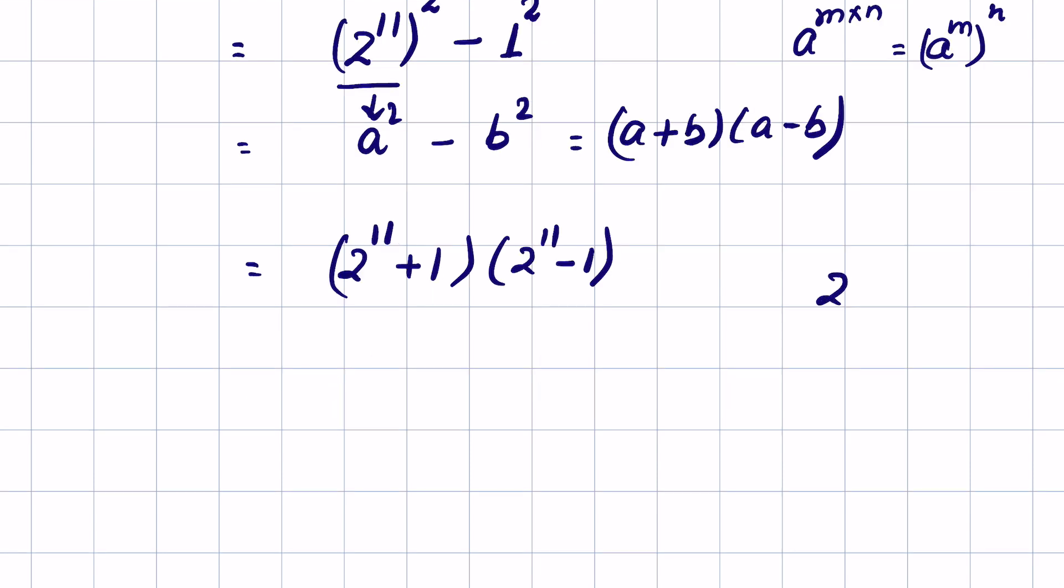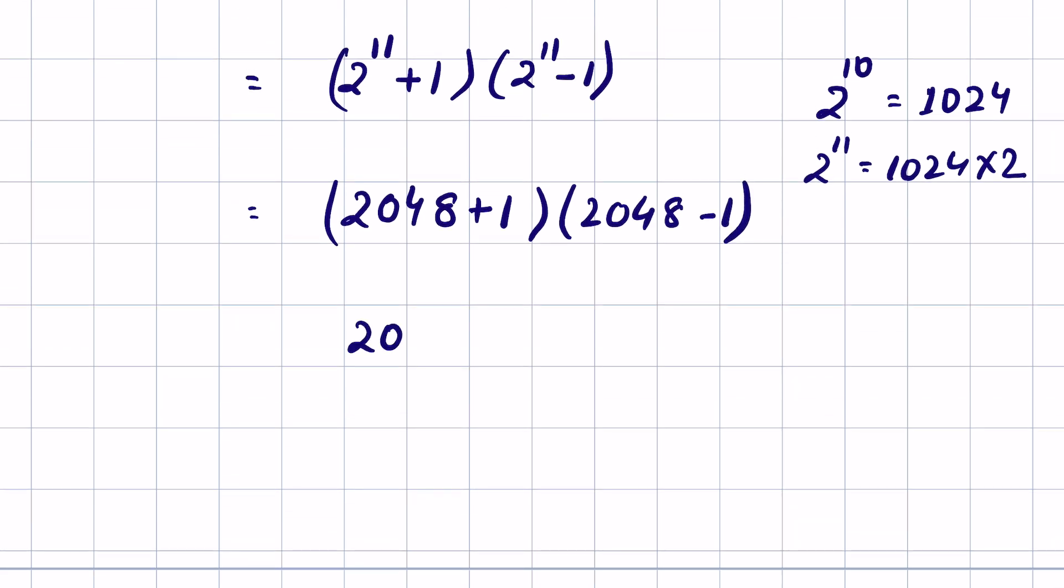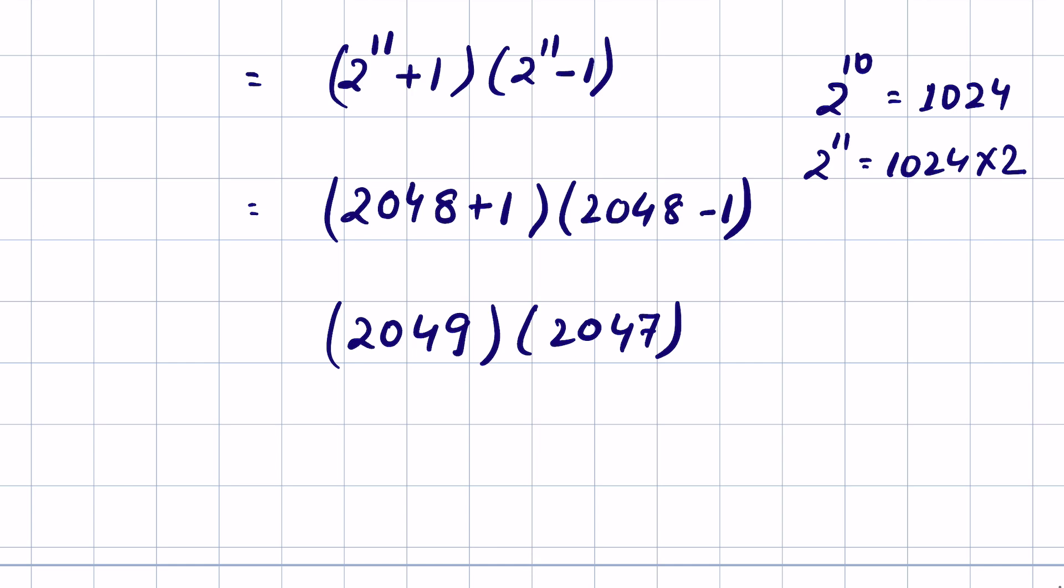2 raised to the power 10 equals 1024, so 2 raised to the power 11 is 1024 times 2, which is 2048. This gives us 2048 plus 1 and 2048 minus 1, or 2049 times 2047, which we can write as 2000 plus 49 times 2000 plus 47.